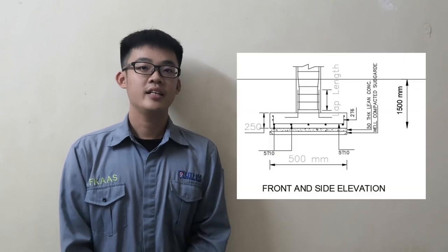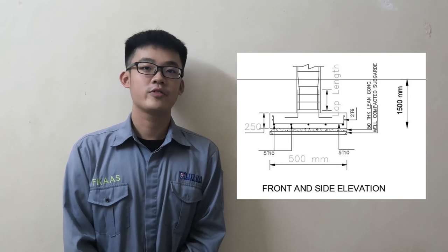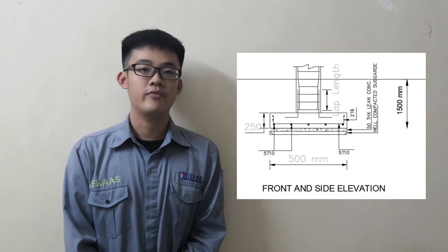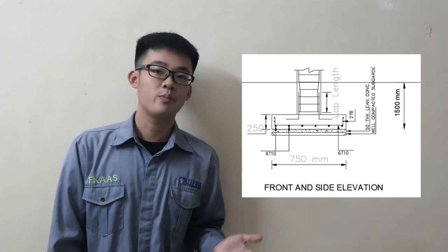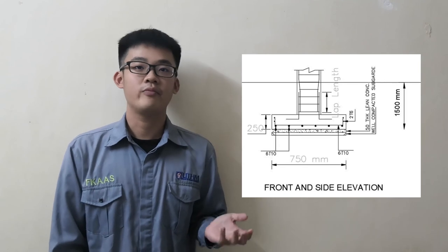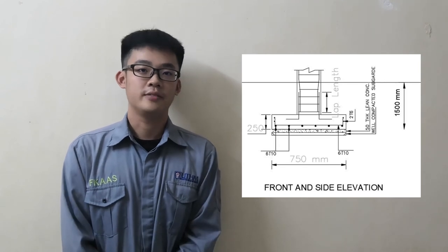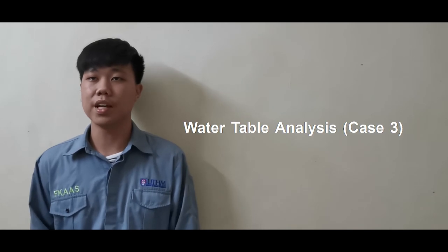Now, this is the foundation detailing drawing. This is the detailing for the 0.5m square foundation, and the next is the detailing for the 0.75m square foundation. Since our foundation design is above the groundwater table, it falls under case 3, and there is no need for modification of the ultimate bearing capacity.